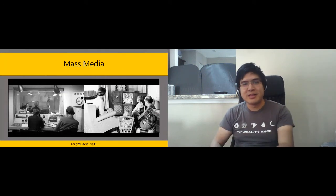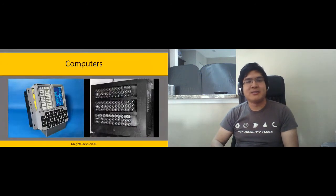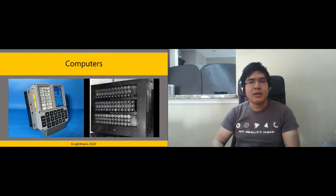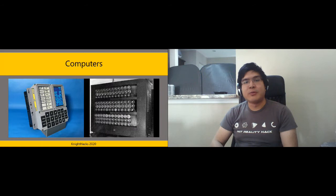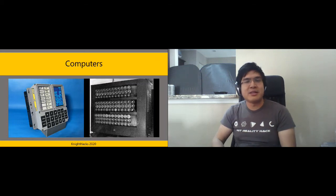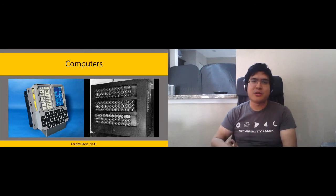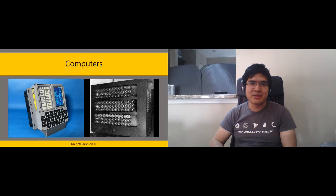Perhaps the most important thing people remember about what television allowed us to do is that it allowed us to see the Moon landing. The development of computers is probably the next big jump in information capability — we had the Apollo guidance computer, and for those in computer science, Alan Turing's work on computation was specifically because they were trying to crack the German Enigma cipher during World War II. A graphing calculator is much more powerful than the Apollo guidance computer — we've made great strides.